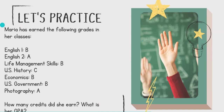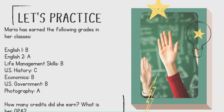Let's practice with this scenario. Maria has earned the following grades in her courses: English 1, a B; English 2, an A; Life Management Skills, a B; U.S. History, a C; Economics, a B; U.S. Government, a B; and Photography, an A. How many credits did she earn and what is her GPA? Pause the video if you would like to practice and find the answer before seeing it.